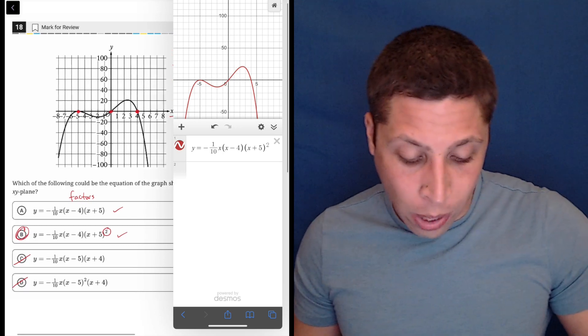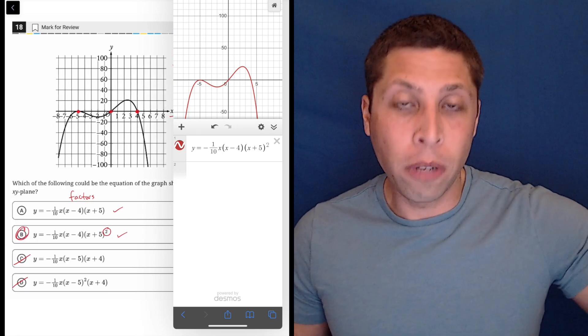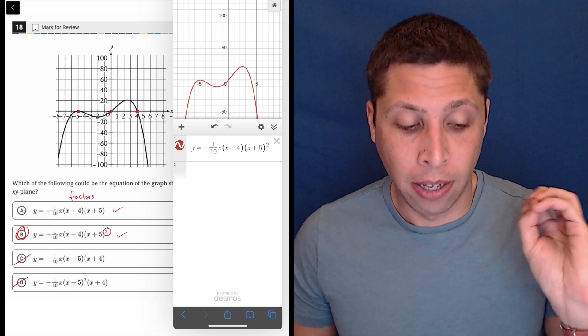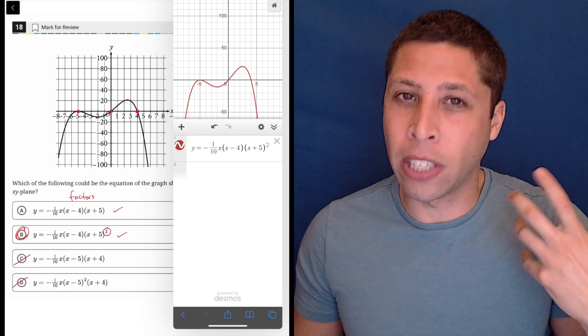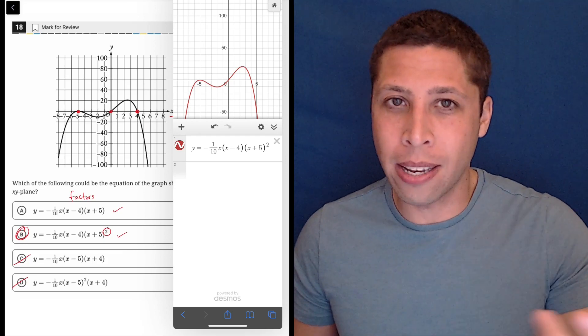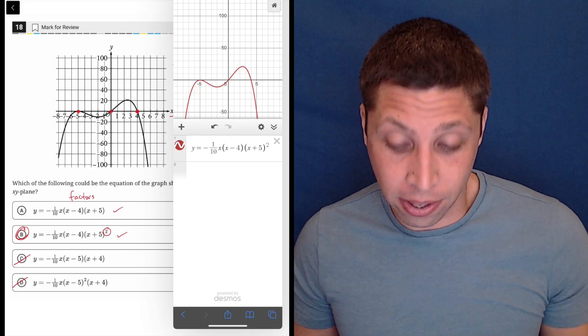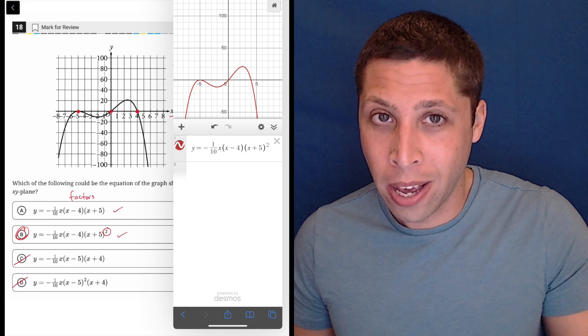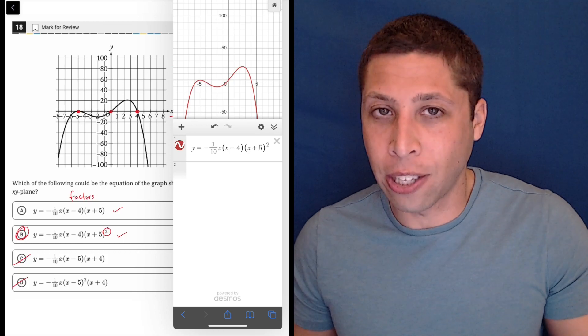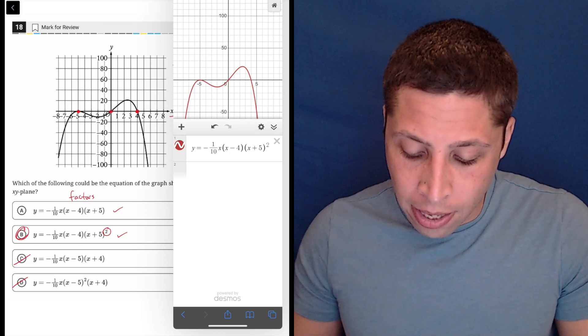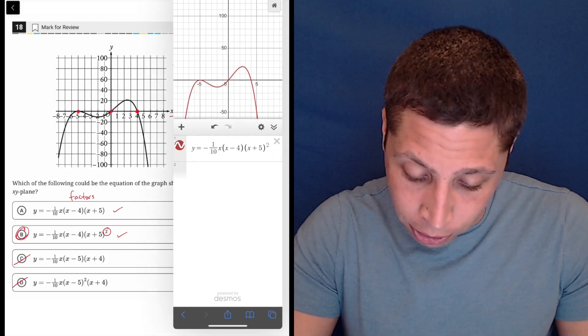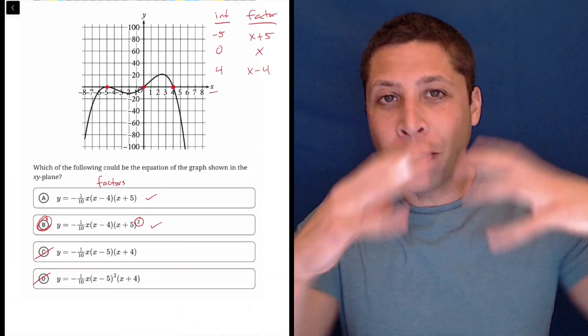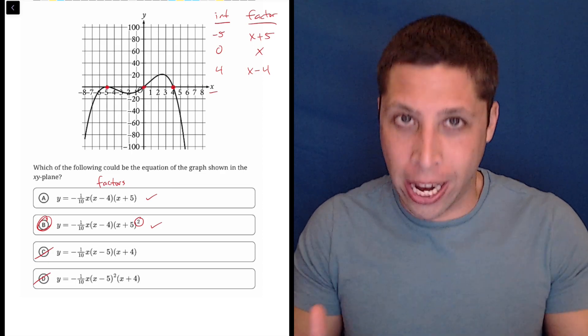So this is a good example of a question where you really should memorize some sort of math fact to get this right quickly and confidently. But if you don't, you still don't really have an excuse for getting it wrong. You can graph all four of these and change the thing and just see which ones look like the graph that they gave you. You have a graphing calculator. It doesn't really take that long.